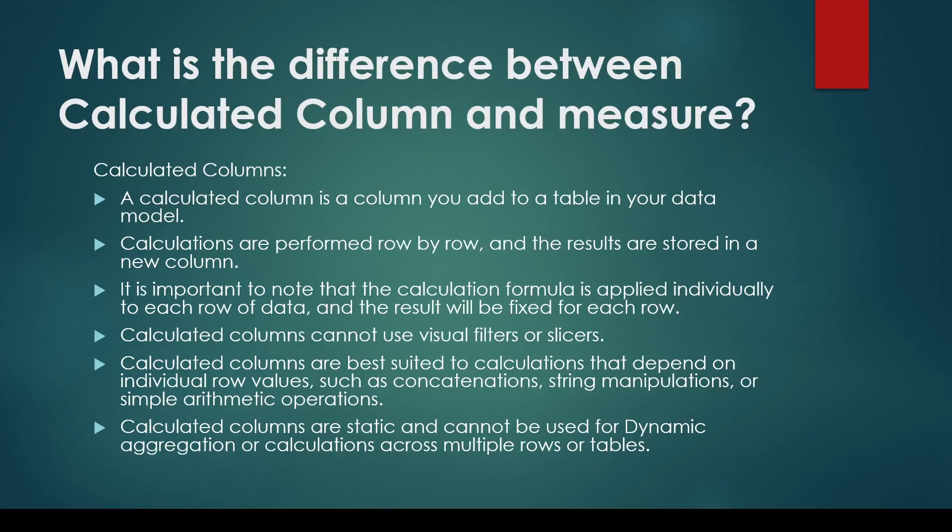So the next question is what is the difference between a calculated column and a measure? In DAX, when you do the calculation, you create a column or a measure. Calculated columns are created row by row and stored in the file. Because it is saved and pre-calculated, it becomes static in nature.